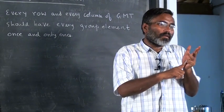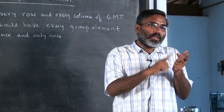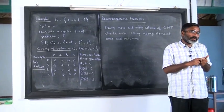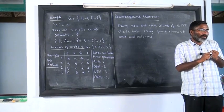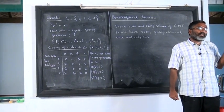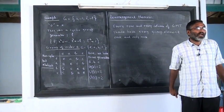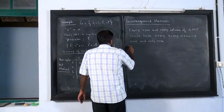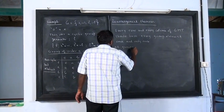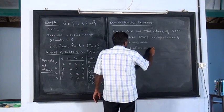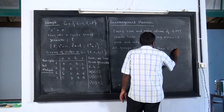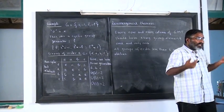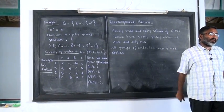For order 1, only a cyclic group is possible. Order 2, only a cyclic group is possible. Order 3, only a cyclic group is possible. Order 4, a non-cyclic group is possible, but that is also abelian. Order 5, once again only a cyclic group is possible. So the first non-abelian group has order 6. You cannot have a non-abelian group with order less than 6. A general rule: all groups of order less than 6 are abelian. You may have a group of order more than 6 that is also abelian, but the first non-abelian group is of order 6.